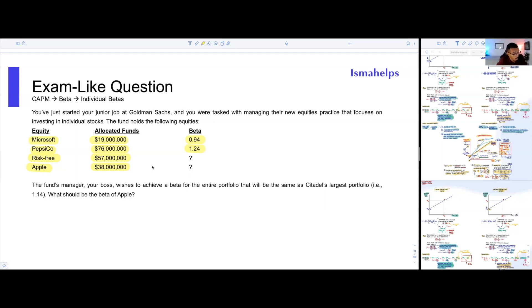The fund's manager, which is your boss, wants to achieve a beta for the entire portfolio that will be the same as Citadel's largest portfolio. In other words, she wants it to be equal to 1.14. And then she asks you, what should be the beta of Apple? I can see how this is slightly ambiguous, but fortunately for you, especially if you've done a lot of the practice I have out there, this is kind of like a walk in the park.